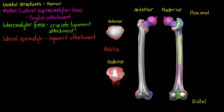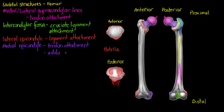On the inner or medial surface of the bone, we can see in purple our medial epicondyle. The medial epicondyle is a much larger protuberance than the lateral epicondyle and is a point of tendon attachment. The medial epicondyle also has another structure associated with it called the adductor tubercle, which is the point where the adductor magnus muscle — or the tendon of that muscle — attaches.